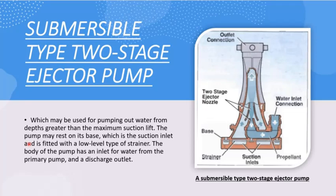The next type is the submersible ejector pump, which is used in cases where you have to pump out water from depths greater than the normal suction lift. In such cases you cannot use normal pumps, so the pump is submerged in the fluid to be pumped out. Water is introduced through the water inlet connection as the propellant. At the converging section, due to the Venturi effect, the pressure is reduced and the surrounding fluid gets sucked into the propellant stream and carried out. Since this is a two-stage pump, there are two ejector nozzles.